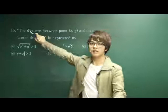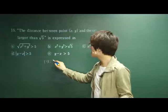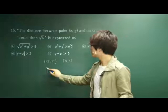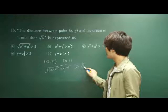When you see the word distance, you should immediately think of what, the distance formula. When we are given a point x, y and the origin, which is 0, 0, the distance formula is x minus 0 squared plus y minus 0 squared. This got to be larger, larger than square root of 5.